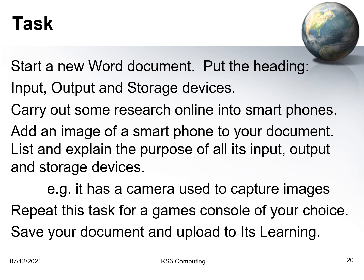Once you've made your document, spell check and proofread it to make it as error-free as possible and of professional quality. Use black text on a white background, ensure any images are distortion-free and of a suitable size, and include proper headings and subheadings. Text must be readable — use a standard font like Arial, with body text between 10 and 12 points maximum. Only headings and subheadings should be larger. Save your document and upload it to its learning for checking.